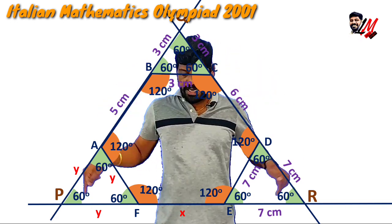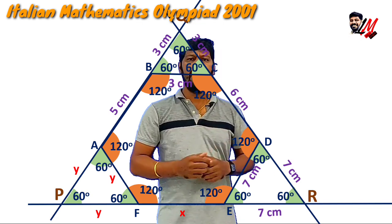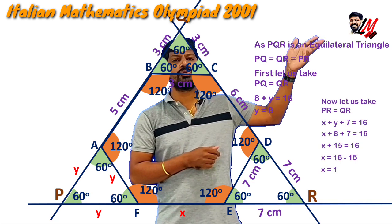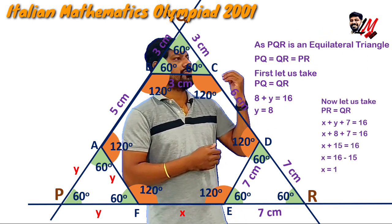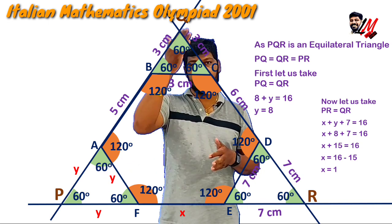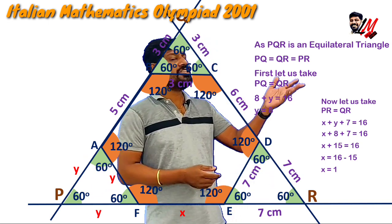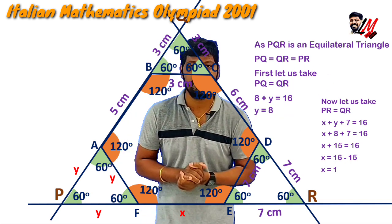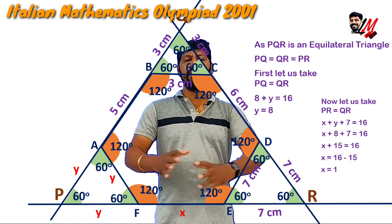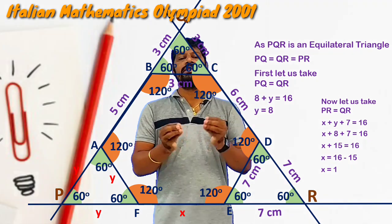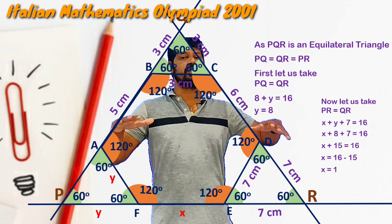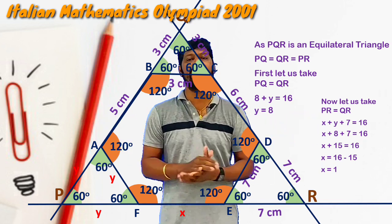So clearly you can see the entire equilateral triangle PQR. In any equilateral triangle all sides are equal, so PQ = QR = RP. By substituting the values and equating the sides of the equilateral triangle, you get X = 1 and Y = 8. So my dear children, it is simply the equilateral triangle property and the linear pair of angles — only these two concepts were used in building this question. You are supposed to understand the beauty behind this problem.